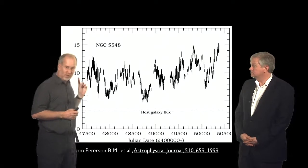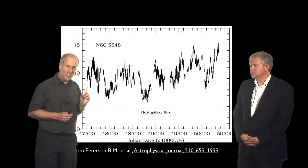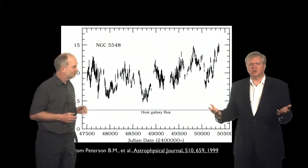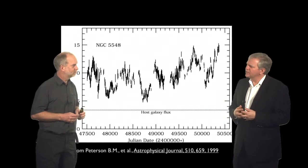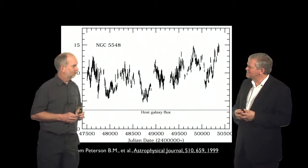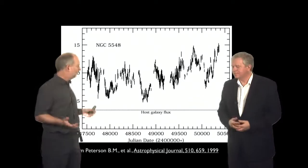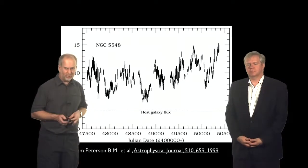If this thing is changing on timescales of days, it can't be bigger than light days across. But light days across is the size of our solar system. And it takes about a little less than a day for light to get out to Pluto. So we need something that's insanely bright, the size of the solar system. As bright as 10,000 galaxies and smaller than our solar system, this is looking pretty weird.